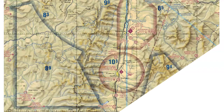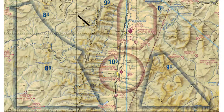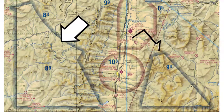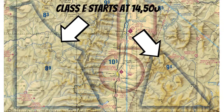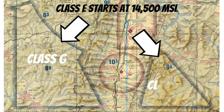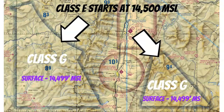Remember these hazy blue markings? Anytime you see these, the Class Echo airspace inside of those starts at 14,500 feet MSL. So that means the Class Golf underneath that starts at the surface and goes up to, but does not include, 14,500.